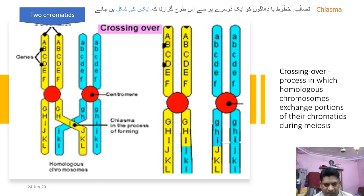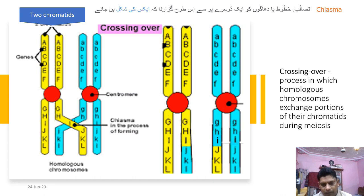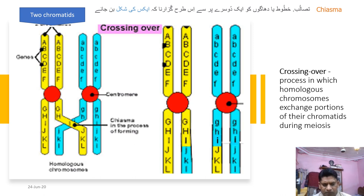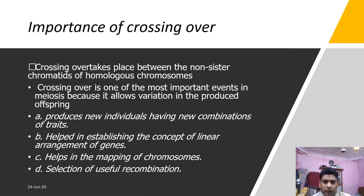The point at which crossing over takes place between two homologous chromosomes via the non-sister chromatids is known as chiasma. Crossing over is the exchange of portions of the chromatids, whereas chiasma is the X-shaped point where one chromatid crosses over another. Crossing over is very important because it produces new individuals with new gene combinations, helps establish the concept of linear arrangement of genes, helps in mapping of chromosomes, and enables selection of useful genetic combinations.